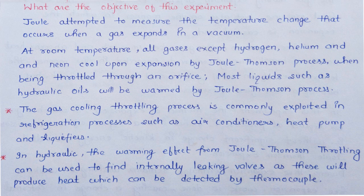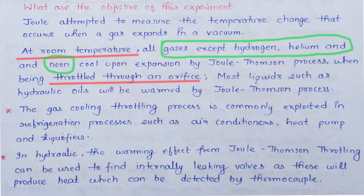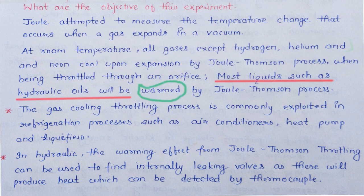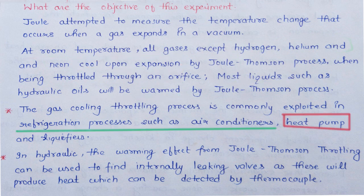इस experiment का aim था कि जब real gas, liquid या ideal gas को किसी vacuum में expand कराया जाता है तो उसके अंदर temperature change क्या होता है। इस experiment में यह पता लगाया गया कि hydrogen, helium, और neon को छोड़कर सभी gases expansion के बाद ठंडी होती हैं, तथा सभी liquids expansion के बाद गरम होते हैं। गैस cooling process का इस्तेमाल air conditioners, refrigeration process, या heat pumps बनाने में किया जाता है।